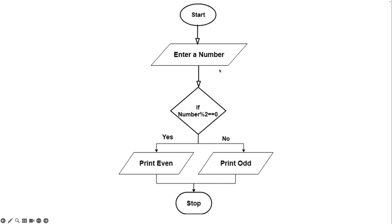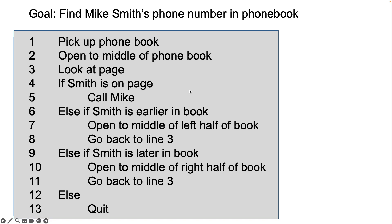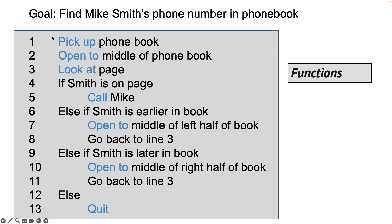We can also represent this in the form of a flowchart — I have a video about flowcharts coming. For the odd/even example: enter a number, check the modulo, if it equals zero the number is even, if not print that the number is odd, then finish the program. This is all independent of the programming language used. Now, looking back at the Michael Smith phone book example, we can write pseudocode for that binary search algorithm as well.